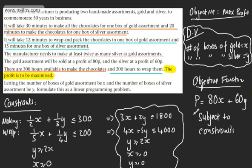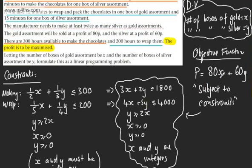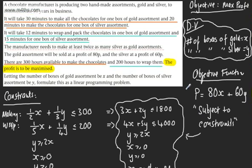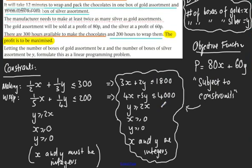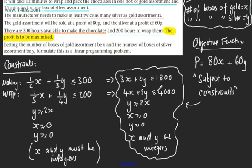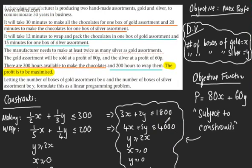We need to write this subject to constraints, and then list them. Subject to the constraints, these are the constraints we have to play by in order to maximise our profit. So: objective function P equals 80x plus 60y, maximise, subject to these constraints.